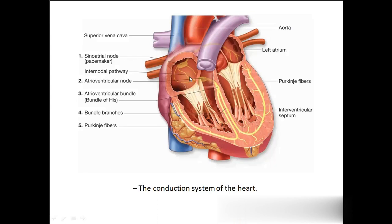AV node means atrioventricular node. From there the pathway goes as the bundle of His. These are the bundle branches — the right bundle branch goes to the right ventricle and the left bundle branch goes to the left ventricle. From there we have branches called Purkinje fibers.